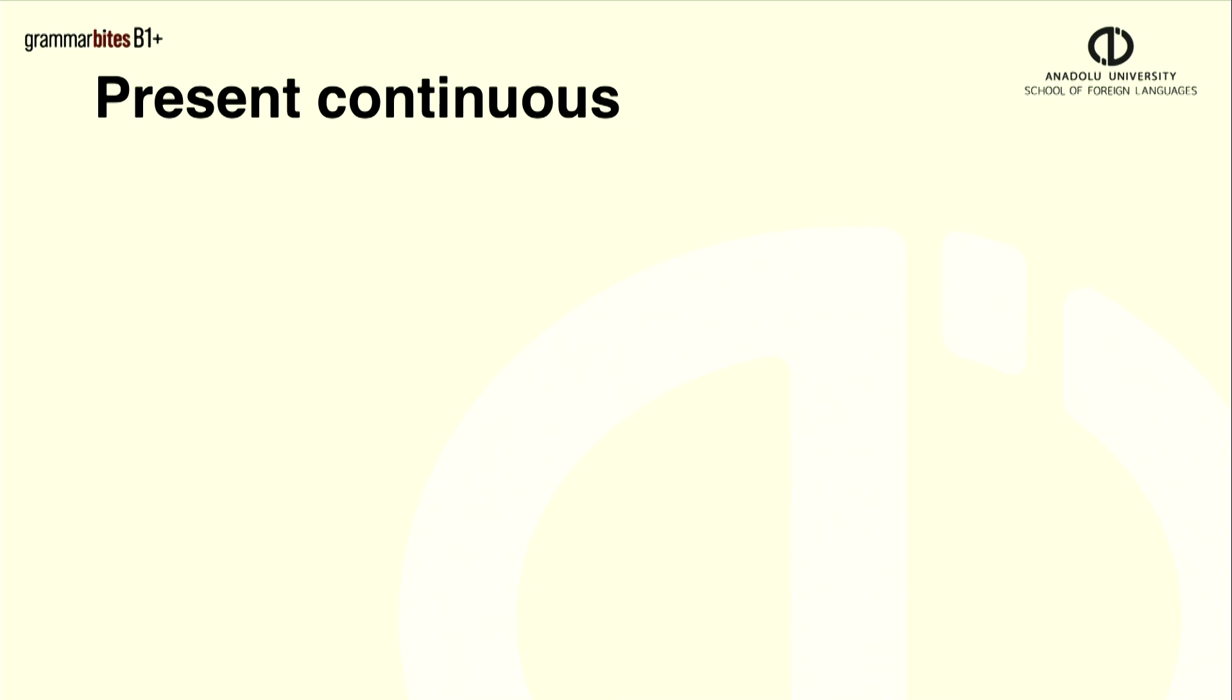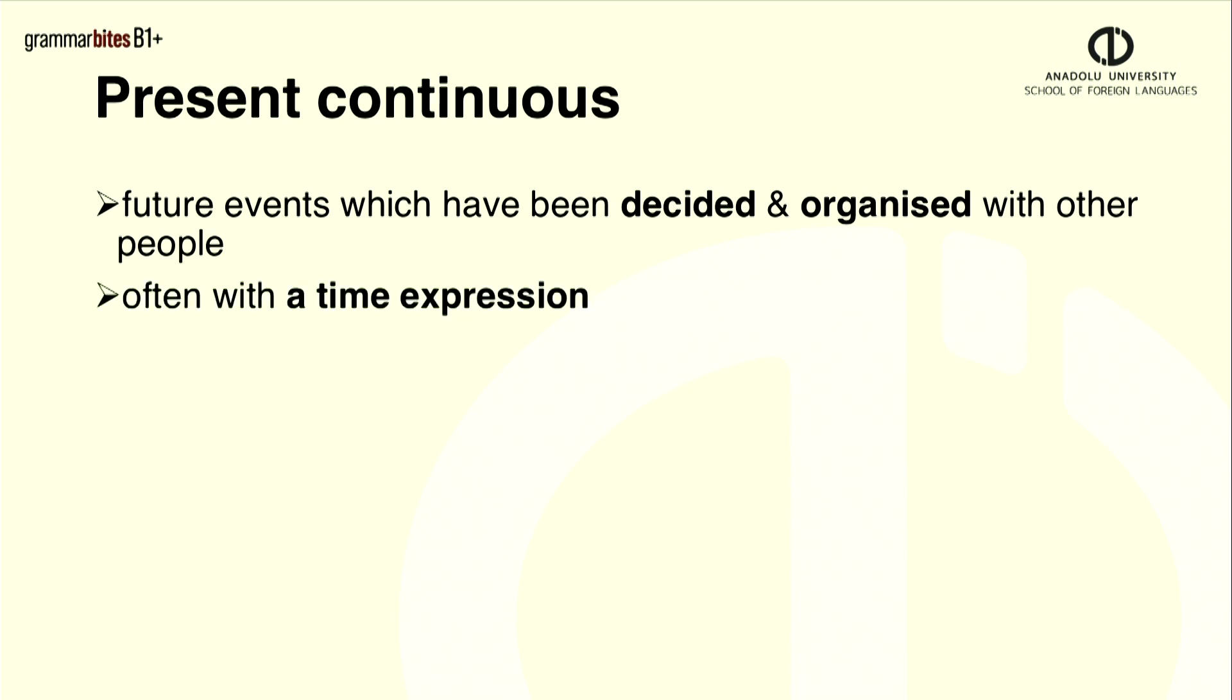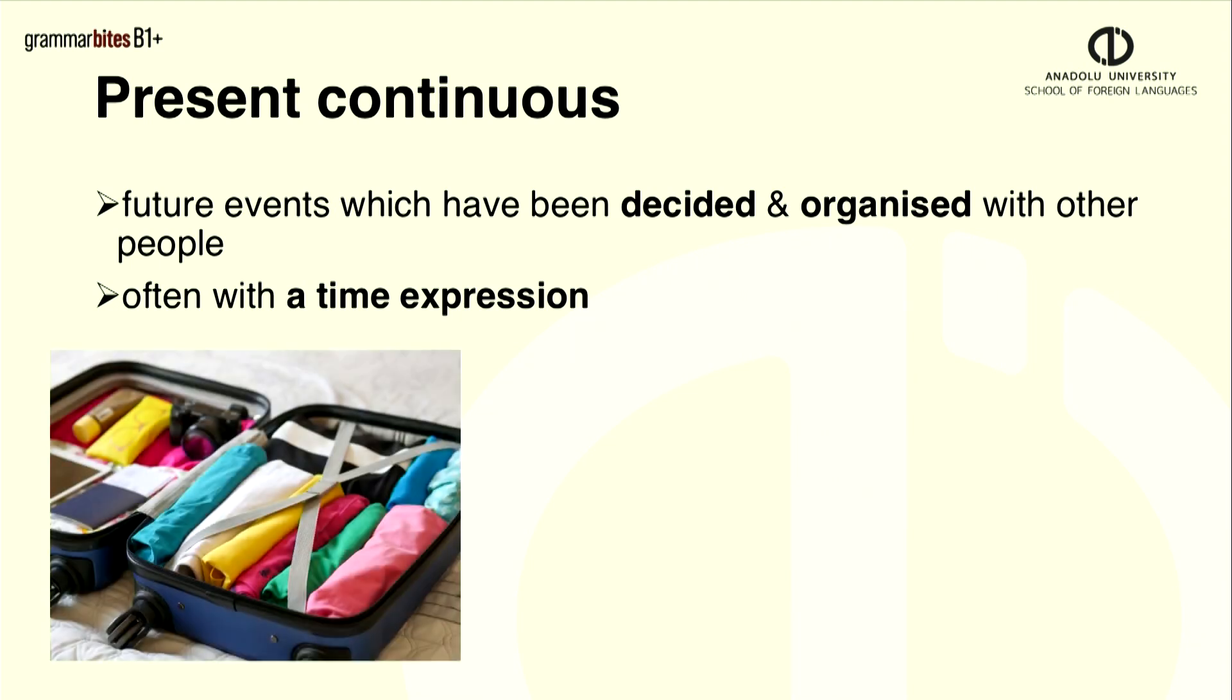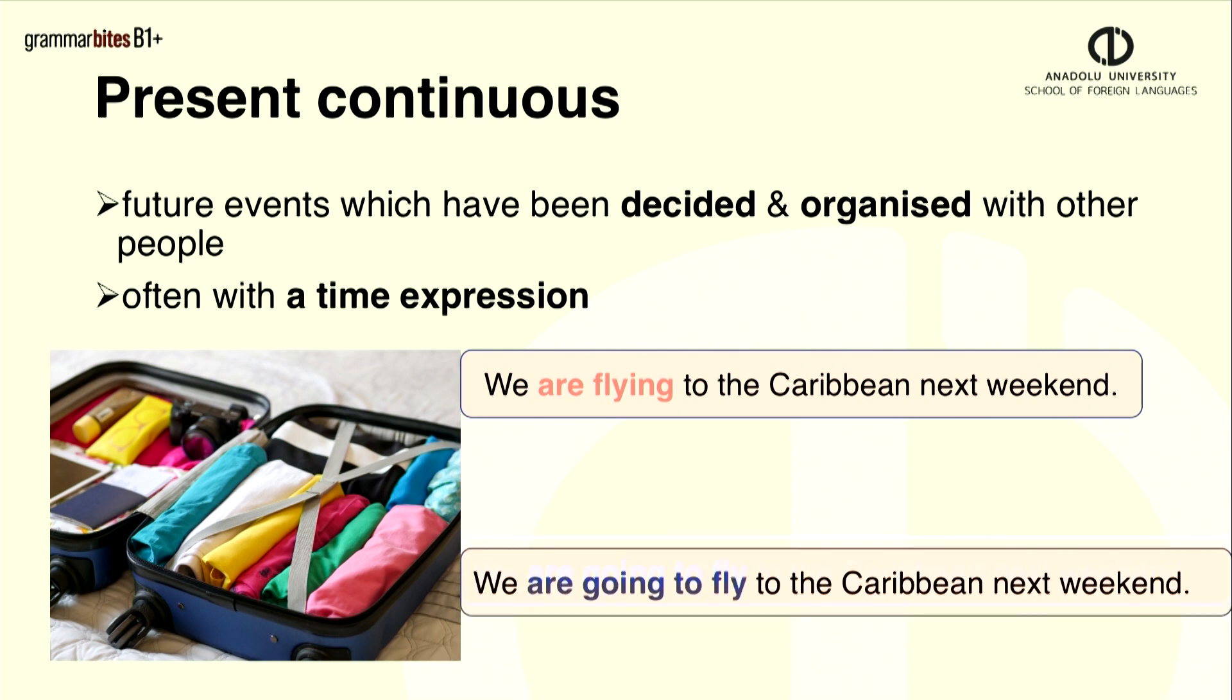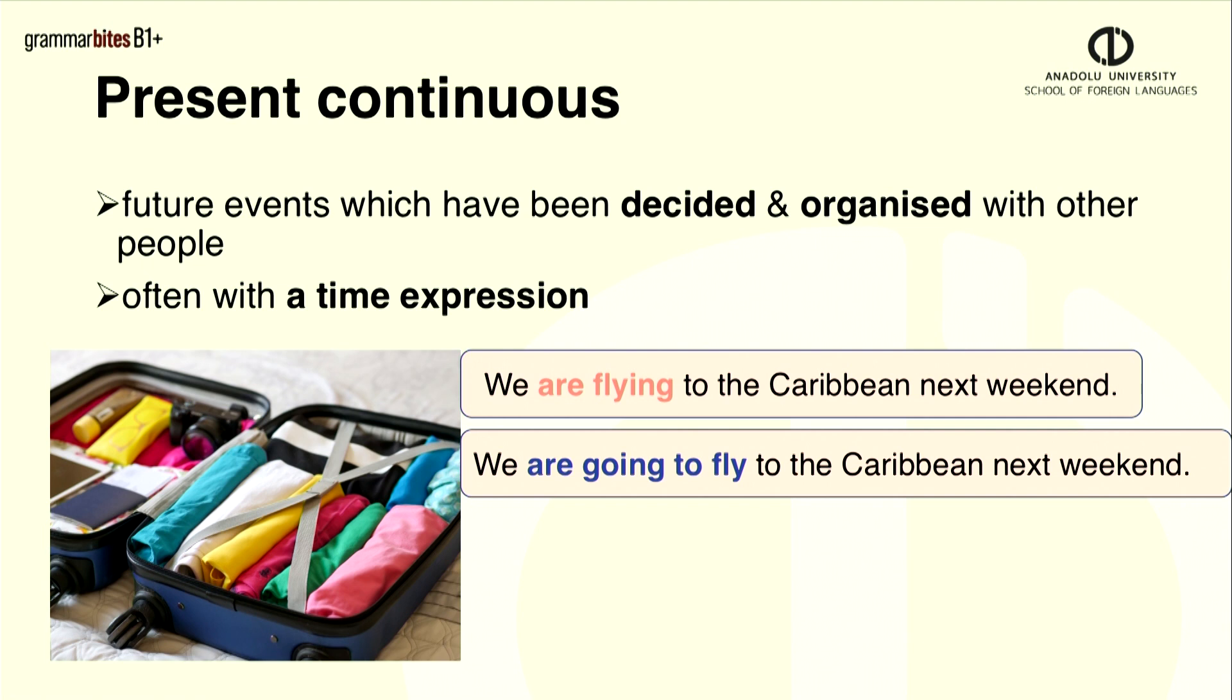Let's start with the present continuous. We use this tense for organizations or arrangements in the future. We have a date or time and generally other people are involved. We often use it with a time expression to avoid confusion with the present meaning. For example, we are flying to the Caribbean next weekend. We can also say the same thing using be going to: We are going to fly to the Caribbean next weekend.